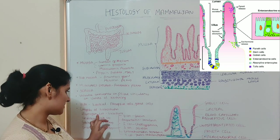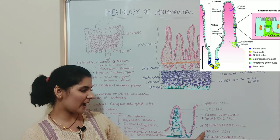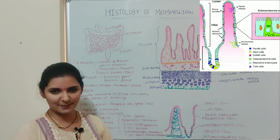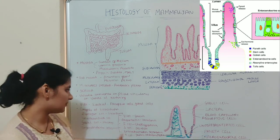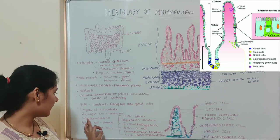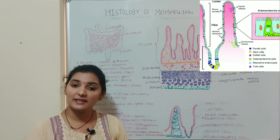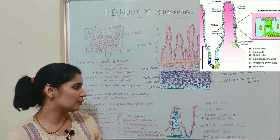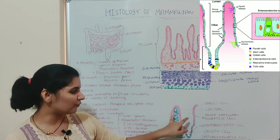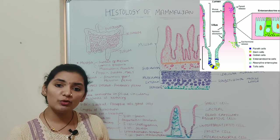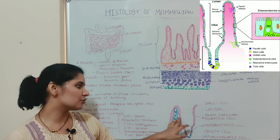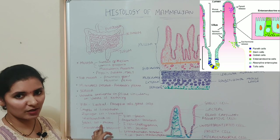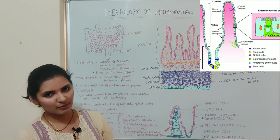The first cell type is zymogen cells, also known as Paneth cells. These Paneth cells are present at the lower part of the Crypts of Lieberkühn and produce lysozyme. The second type is undifferentiated cells, which are stem cells. They proliferate to produce goblet cells and absorptive cells of the villi, and newly formed cells migrate from the crypt to reach the villi. The third type is goblet cells, also known as mucus cells, which produce mucus.